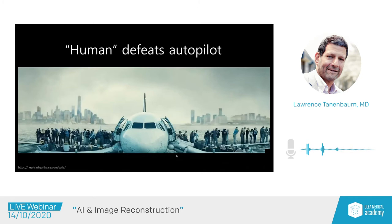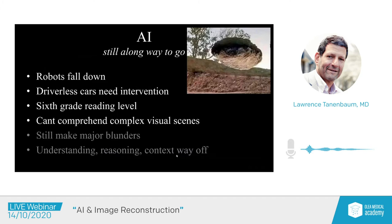Every once in a while, a human needs to override the intelligence, just like Sully did just outside my window in New York City. While there have been pretty impressive achievements in the AI space, there are still a lot of challenges ahead. Robots do really well until you stick a pencil on the floor. Driverless cars occasionally get themselves into trouble. Despite all the achievements we hear about every day, when it comes to reading, computers can only comprehend at about the sixth grade reading level.